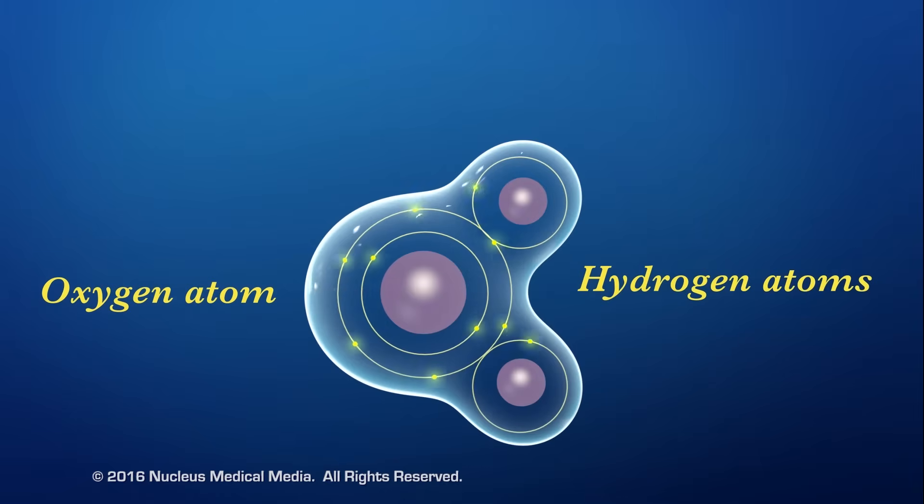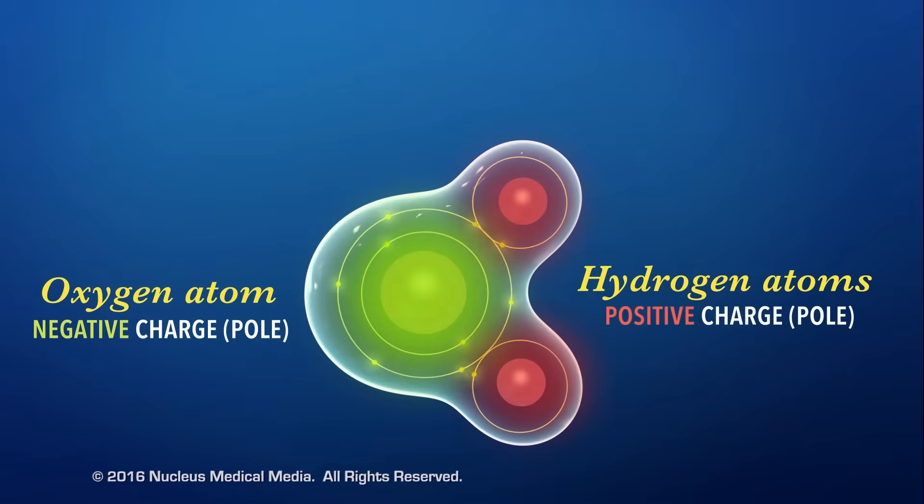As a result, a partial negative charge develops around oxygen because there are more negatively charged electrons around the oxygen side of the molecule. In comparison, fewer electrons around the hydrogen atoms create a partial positive charge on the hydrogen side of the molecule.